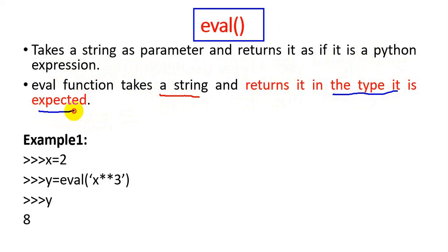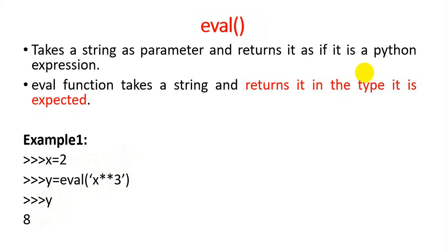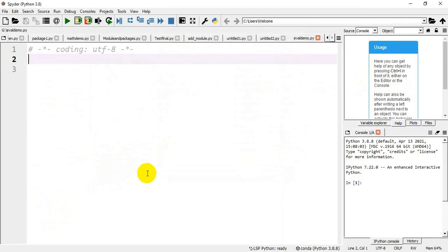For example, x equals 2, and I am passing y equal to eval(x ** 3) as a string. When I print it in interactive mode, it returns the value 8. Now we will open Spyder and go for a demo of the eval() function.